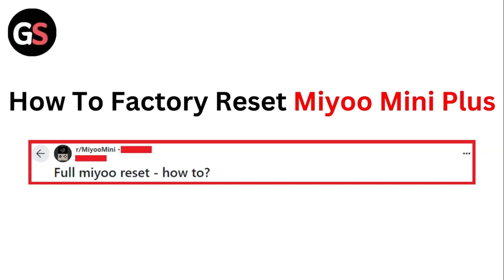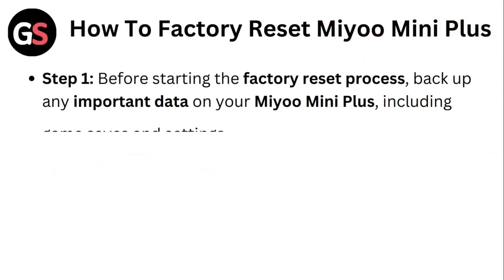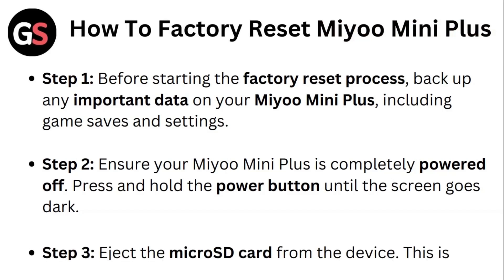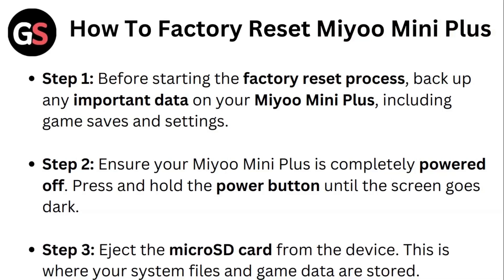Just follow these easy steps. Step 1: Before starting the factory reset process, back up any important data on your Mio Mini Plus, including game saves and settings. Step 2: To ensure your Mio Mini Plus is completely powered off, press and hold the power button until the screen goes dark.